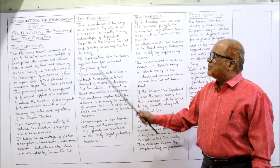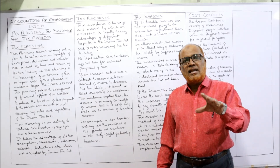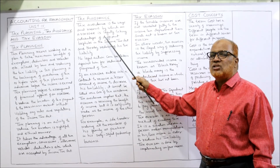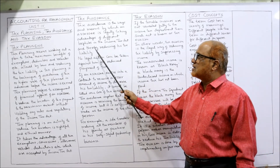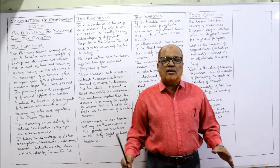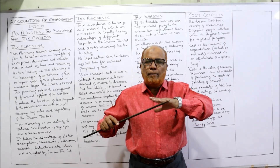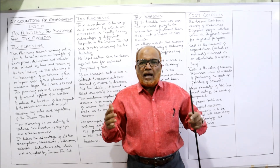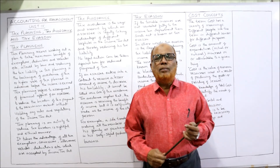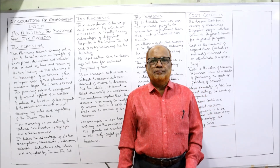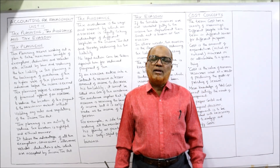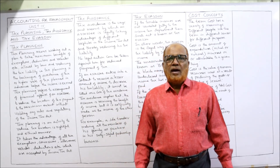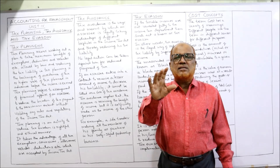The second concept is tax avoidance. Tax avoidance is an activity — it is the ways and means by which a person is legally taking advantage of different loopholes in the Income Tax Act and thereby reducing their tax liability. The law of any country will not be 100% perfect; there may be some loopholes, and a person will take advantage of those loopholes in order to reduce their tax liability.